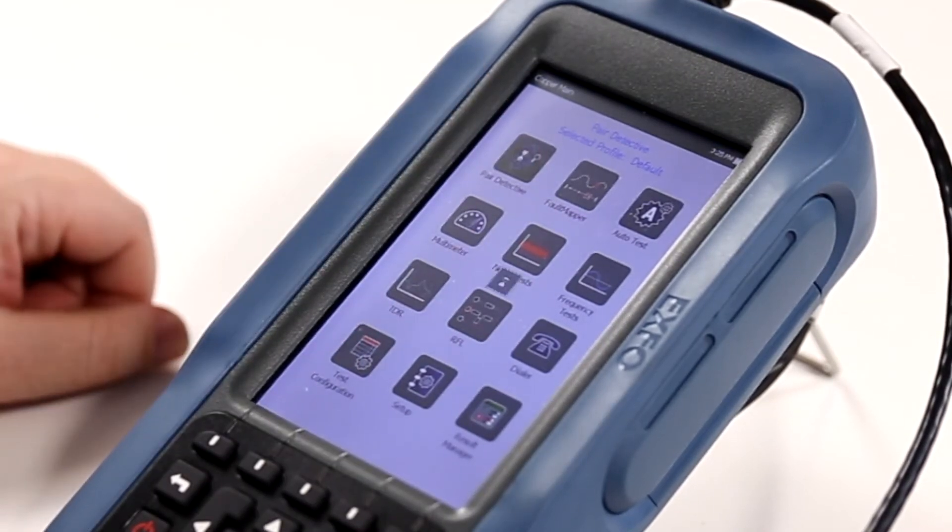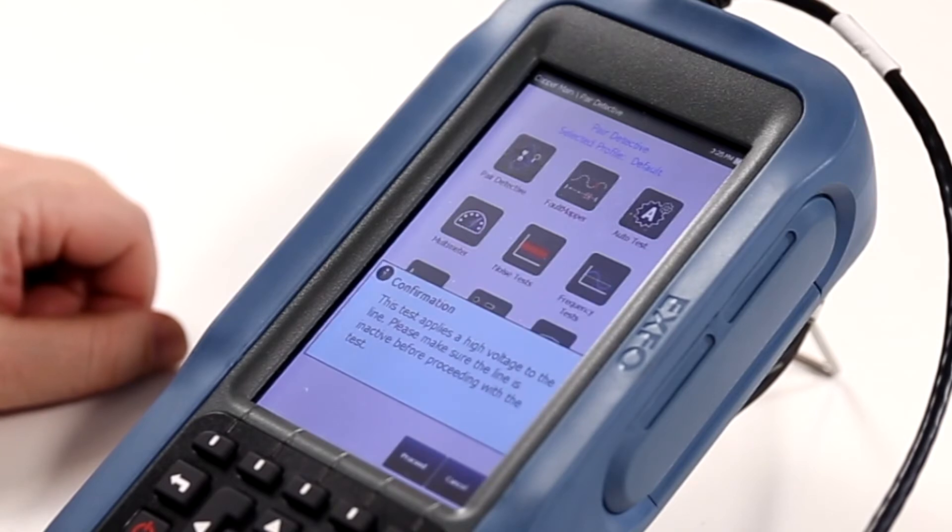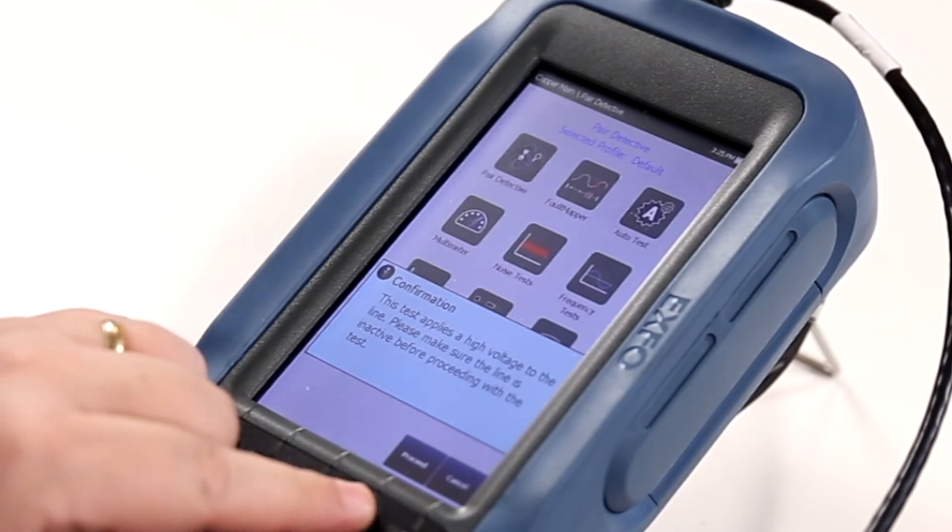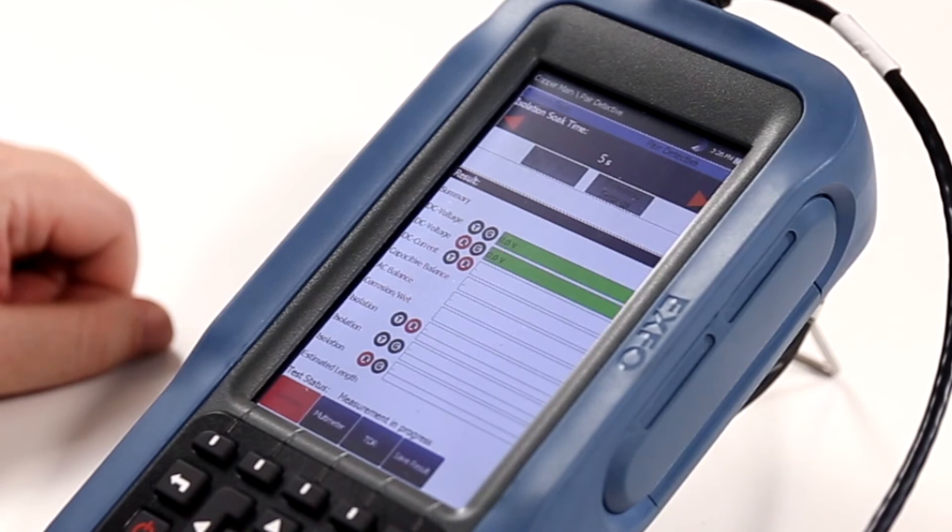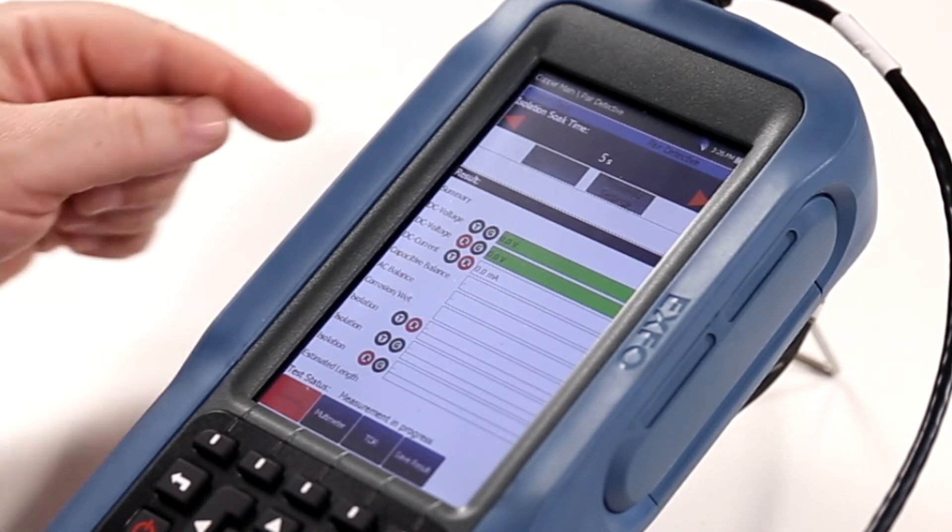By selecting pair detective, the aim is to run through a suite of different measurements. There are a couple messages that appear to highlight to the user that a high voltage will be applied to the line.